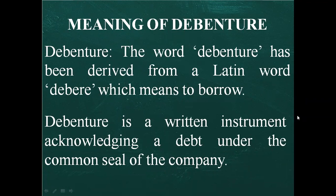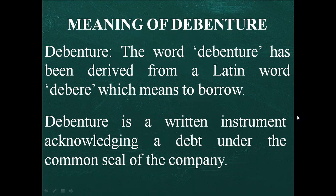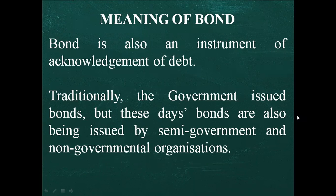First, what is a debenture? A debenture is a written instrument acknowledging a debt under the common seal of the company. Debenture holders are the creditors of the company. When a company collects funds from the public by issuing debentures, that instrument is known as a debenture. The word debenture is derived from the Latin word 'debor' which means to borrow. A bond is similar to a debenture — it is also an instrument acknowledging debt. Normally bonds are issued by the government, but nowadays bonds are also issued by semi-government and non-government organizations. Both terms, debenture and bonds, are used interchangeably.